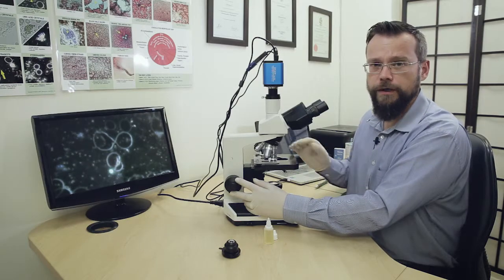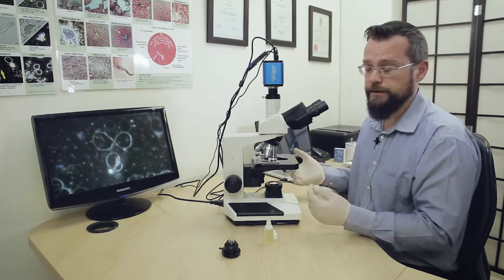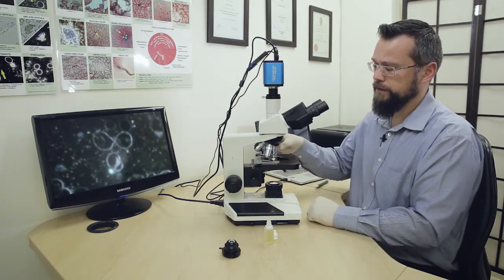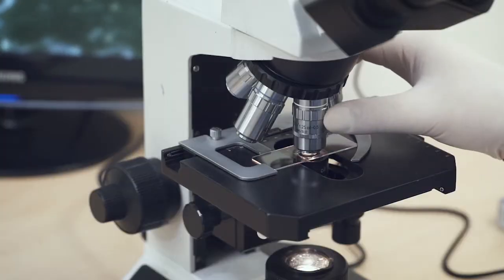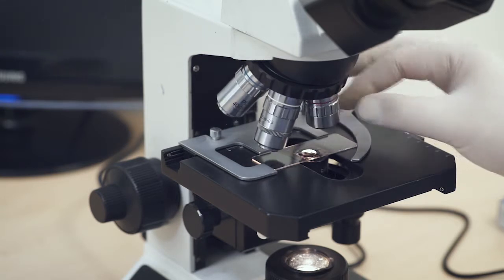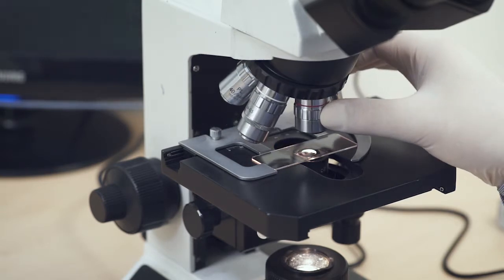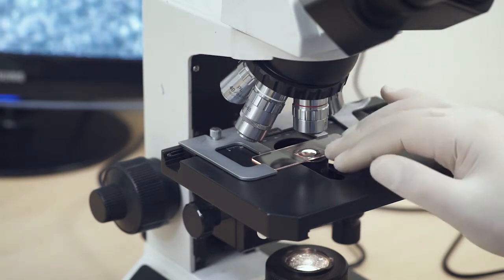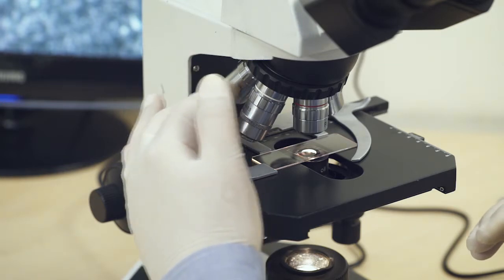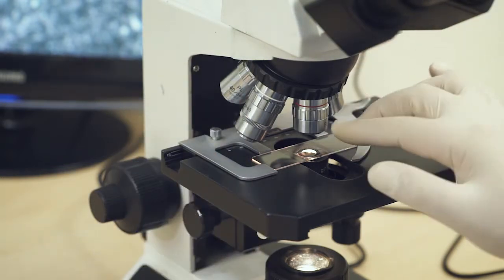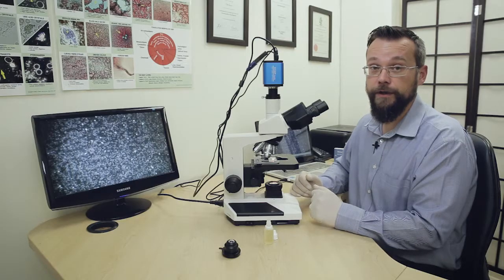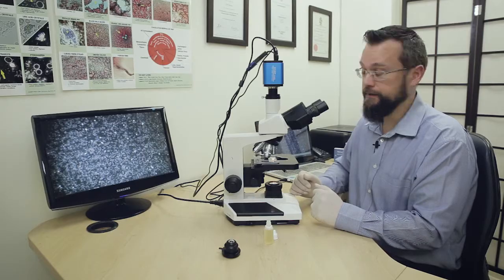After you've used the 100 times objective, be very careful not to get any oil onto your 40 times objective. We recommend moving the objective out of position by moving it towards the left, towards the four times objective. This prevents any oil that's still on top of the slide from getting onto your 40 times objective. Moving towards the four times objective allows us to remove the slide safely without oil getting onto any of the other objectives.